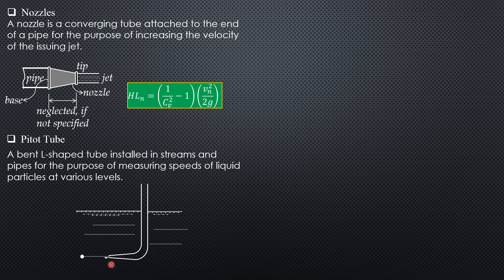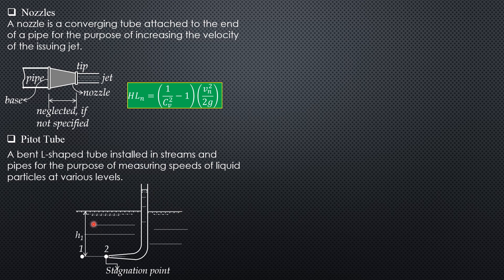In the pipe Pitot tube, the pointed end with a very small opening is called the stagnation point, because as soon as a particle hits that pointed end, the particle will have zero velocity. Because of this decrease in velocity coming to a stop, pressure increases, pushing liquid into the small opening so that the liquid level in the Pitot tube rises higher than the outer liquid surface.